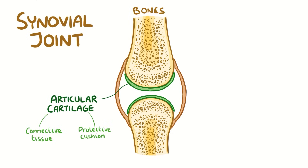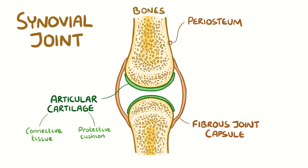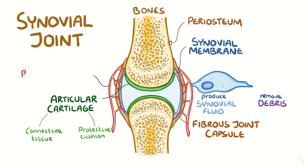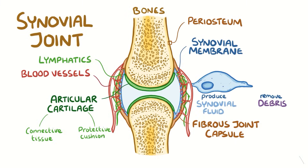A synovial joint connects two bones with a fibrous joint capsule that is continuous with the periosteum, or the outer layer of both bones. The fibrous capsule is lined with a synovial membrane that has cells that produce synovial fluid and remove debris. The synovial fluid is normally a viscous fluid like the jelly part of a chicken egg, and it helps to lubricate the joint. The synovial membrane also has blood vessels and lymphatics running through it. Together, the synovial membrane and the articular cartilage form the inner lining of the joint space.